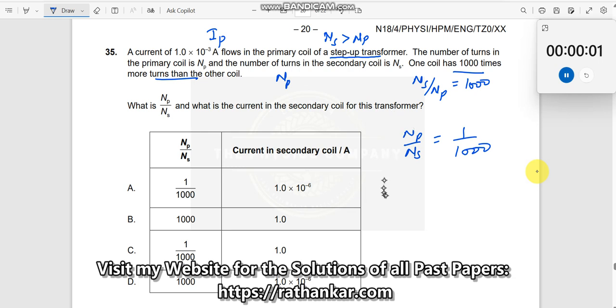And what is the current in the secondary transformer? What you need to know here is that VP by VS is equal to NP by NS. Voltage and the number of turns are related directly, while this is inversely proportional to the current, IS by IP.